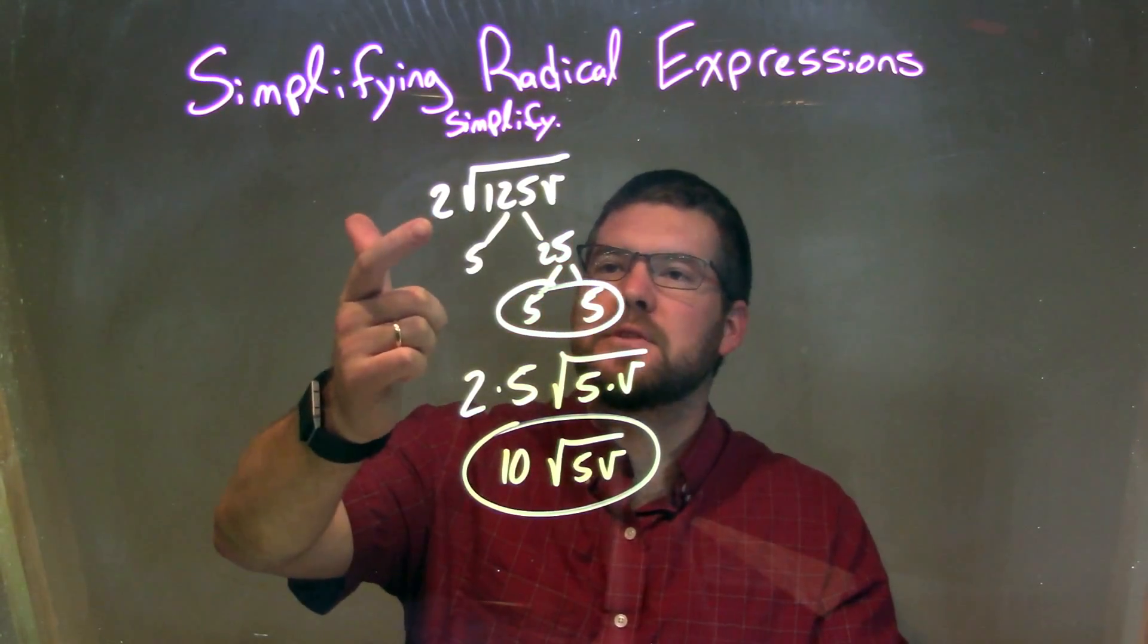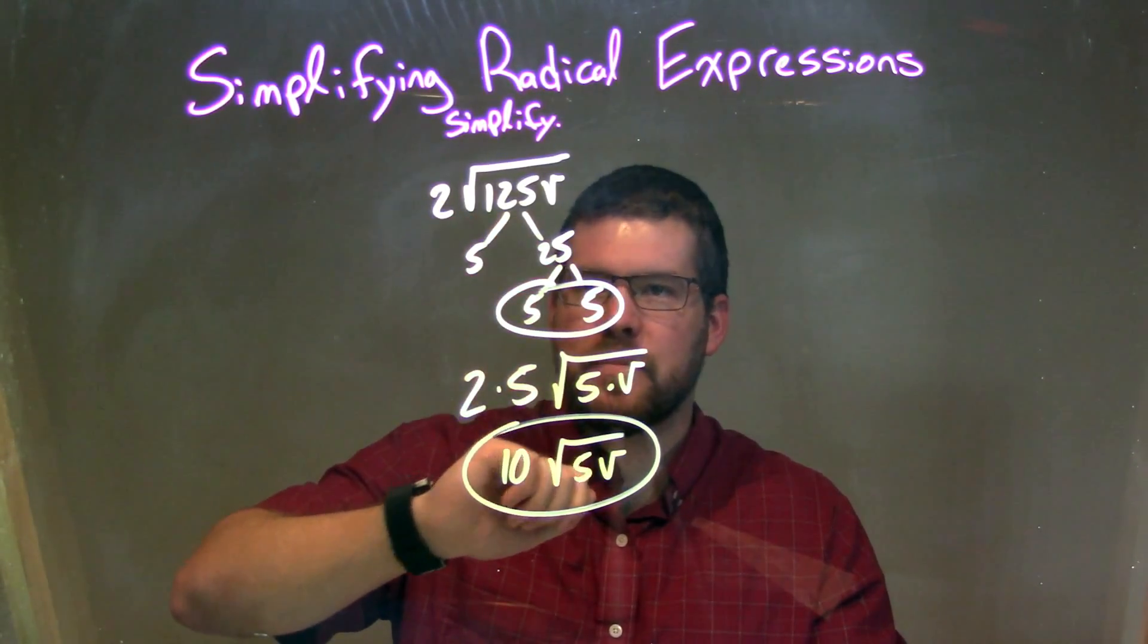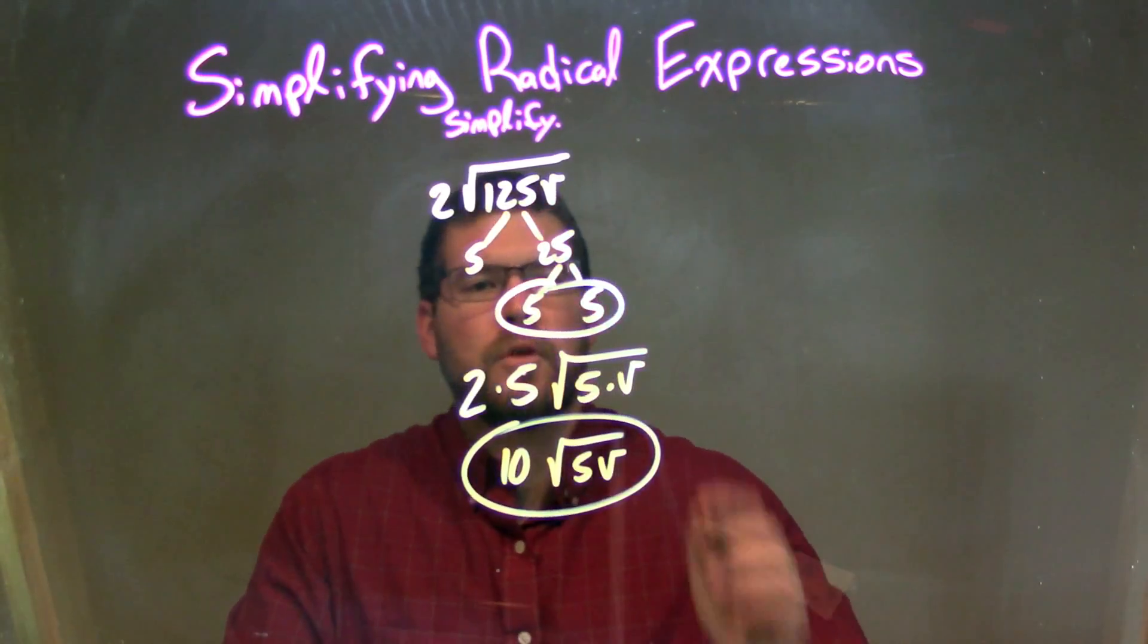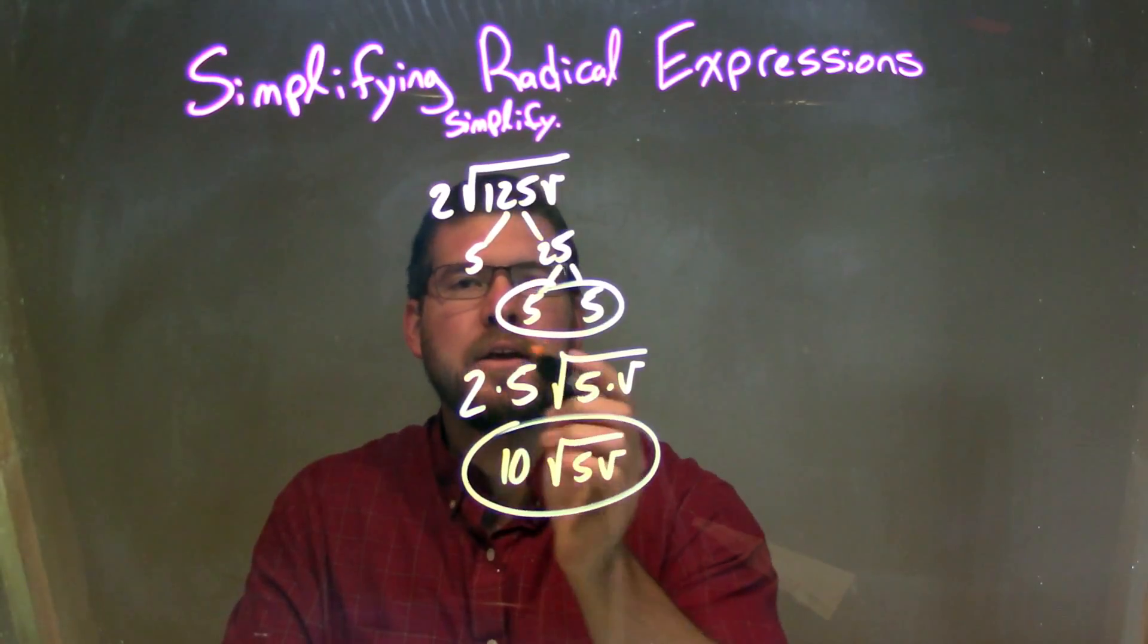So let's recap. We're given 2 times the square root of 125V. 125 broke down to be 5 times 5 times 5. We circle a pair of 5s, but this represents a single one on the outside here, and the 2 stayed on the outside.